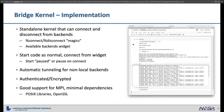Automatic tunneling, automatic encryption, authentication, and good support for MPI. This also only uses OpenSSL and POSIX libraries, so IBM actually has OpenSSL by default, making it easy to bring across machines.